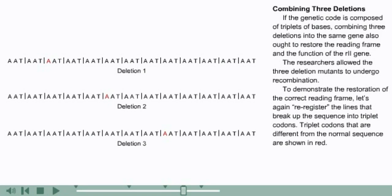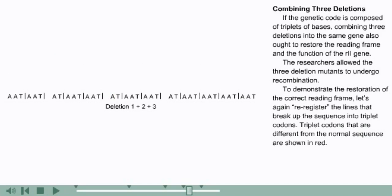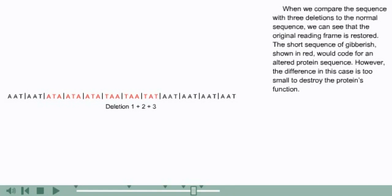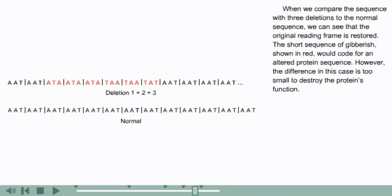If the genetic code is composed of triplets of bases, combining three deletions into the same gene also ought to restore the reading frame and the function of the R2 gene. The researchers allowed the three deletion mutants to undergo recombination. To demonstrate the restoration of the correct reading frame, let's again re-register the lines that break up the sequence into triplet codons. Triplet codons that are different from the normal sequence are shown in red. When we compare the sequence with three deletions to the normal sequence, we can see that the original reading frame is restored. The short sequence of gibberish, shown in red, would code for an altered protein sequence; however, the difference in this case is too small to destroy the protein's function.